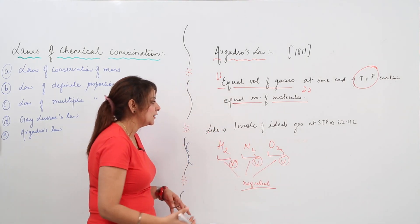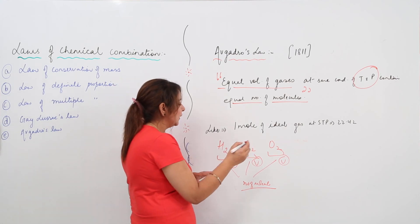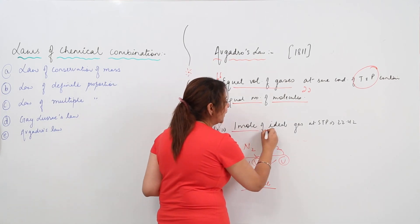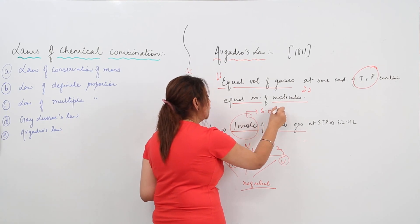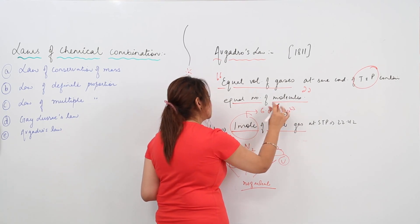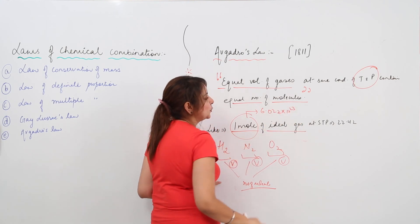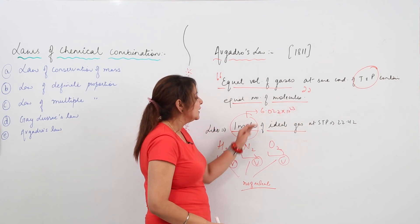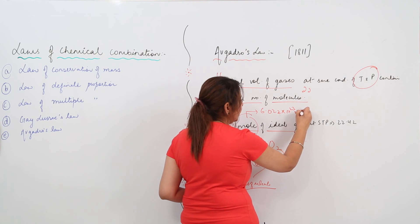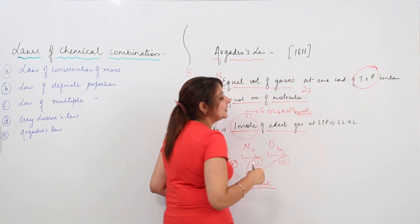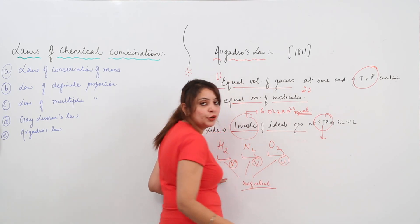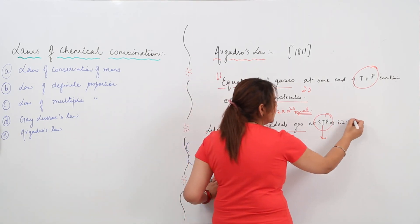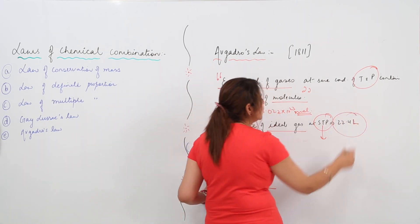We can also state this law as: for 1 mole of ideal gas, which specifies Avogadro number, that is 6.022 into 10 raised to power 23 molecules, at STP condition (standard temperature and pressure), it possesses volume equal to 22.4 liters.